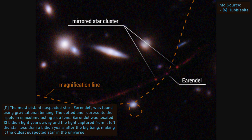Furthermore, gravitational lensing can amplify the light from the source — it's the equivalent of adding another lens the size of a galaxy to your telescope.